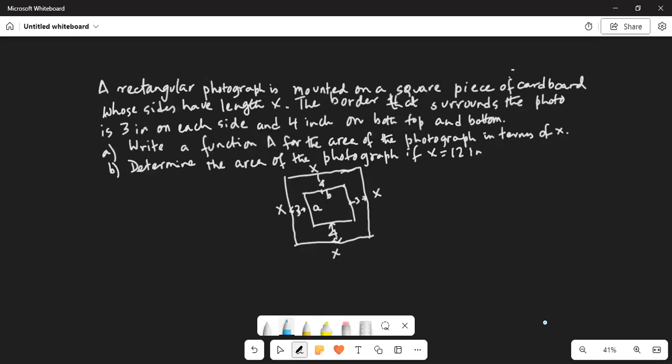A rectangular photograph is mounted on a square piece of cardboard with sides of length x. The border that surrounds the photo is 3 inches on each side and 4 inches on the top and the bottom. Write a function a for the area of the photograph in terms of x, and part b, determine the area of the photograph if x is equal to 12 inches.